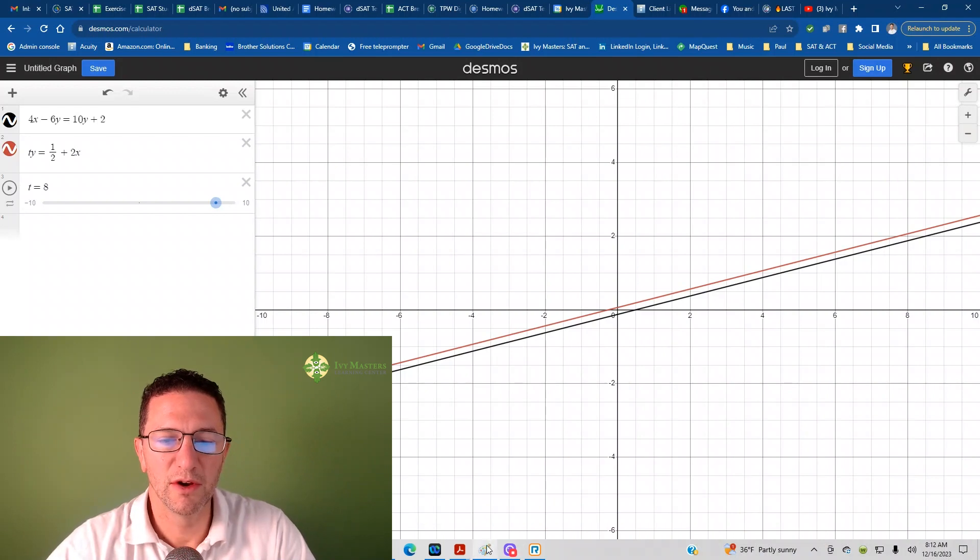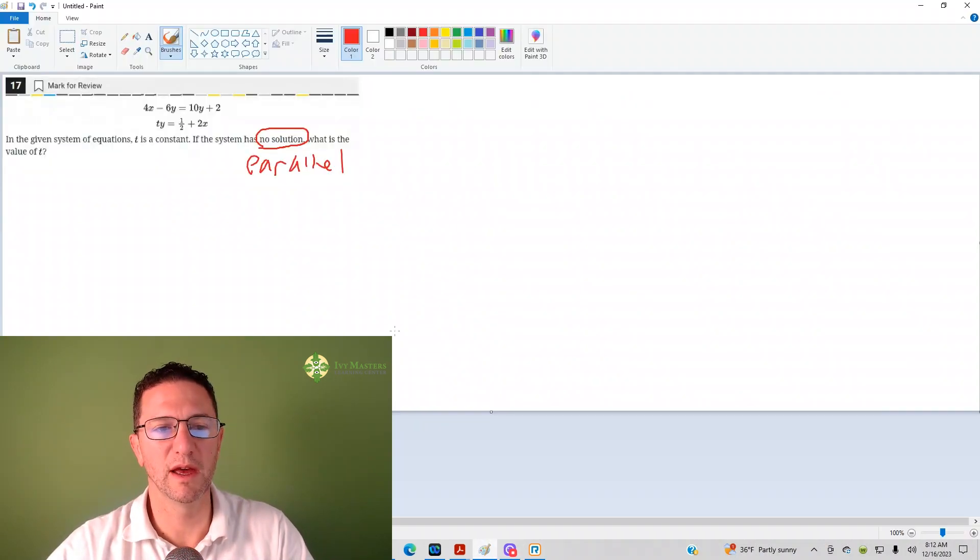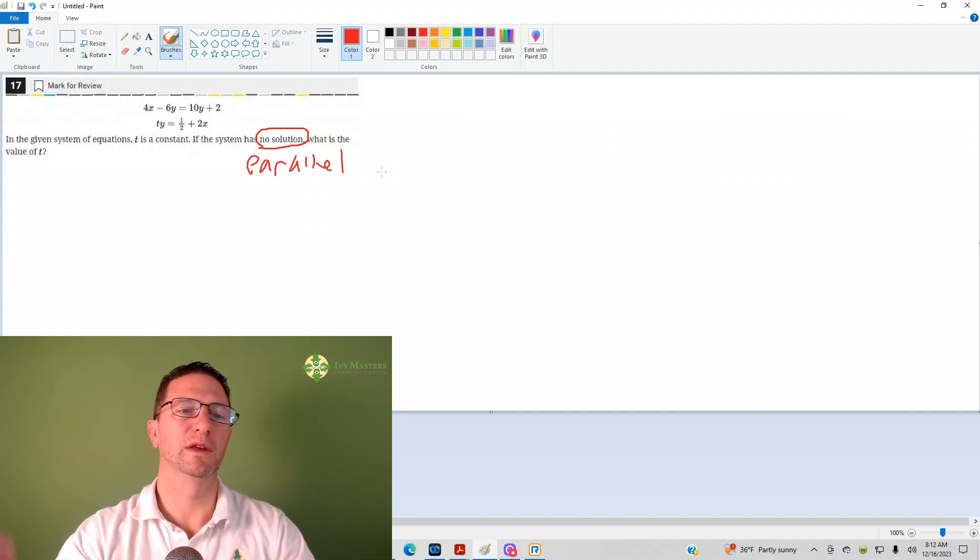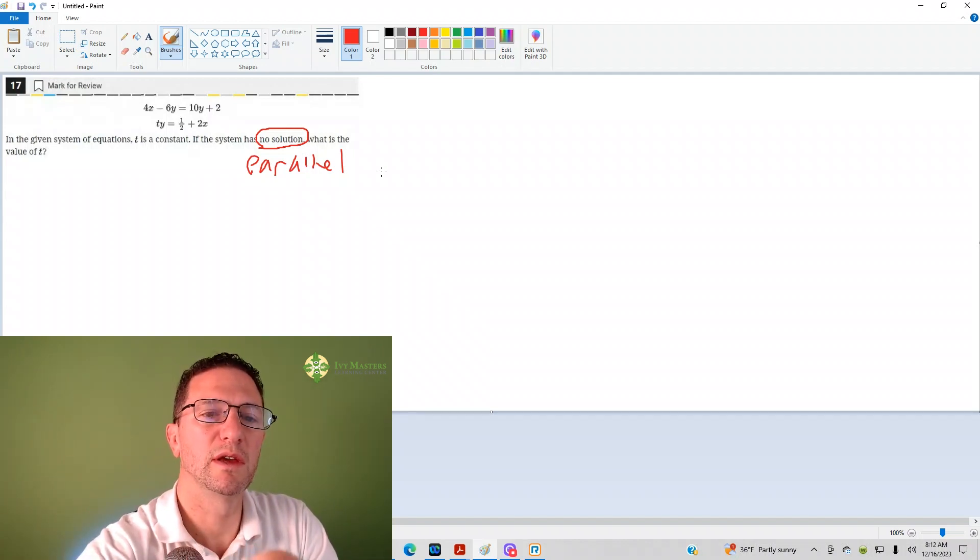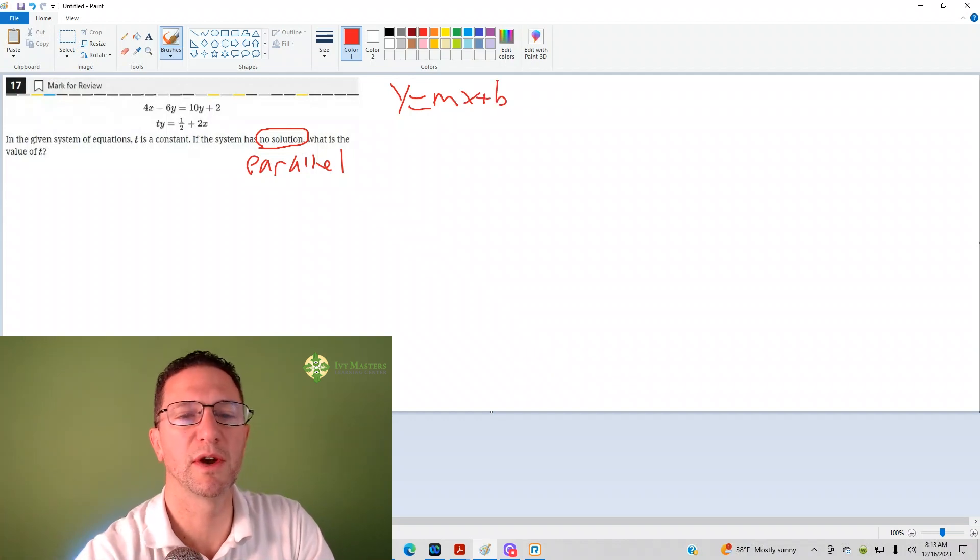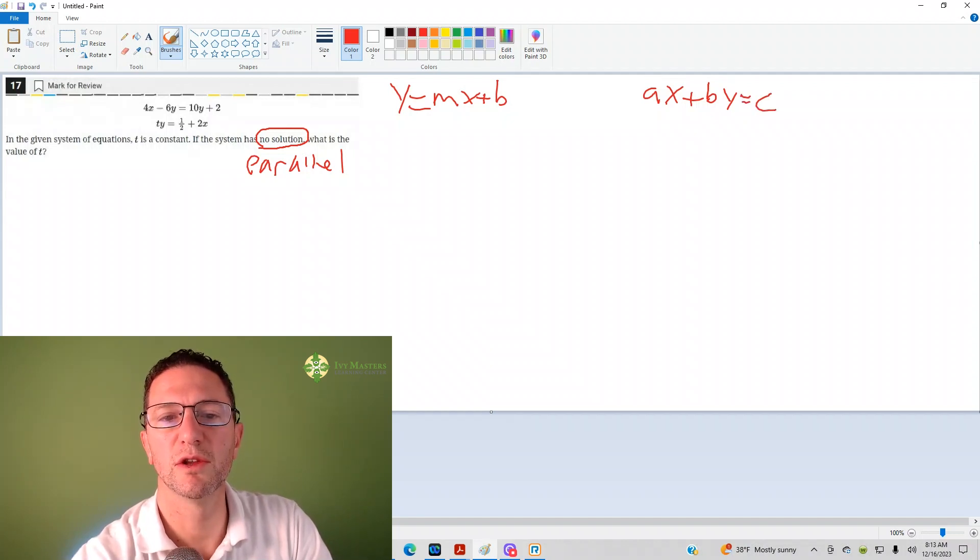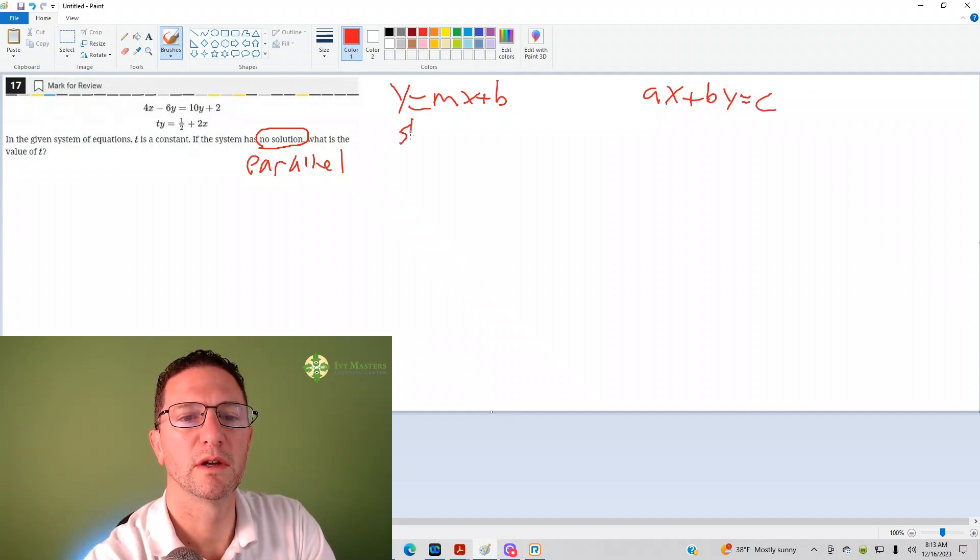Now, if you don't know how to do it, you can definitely do it like that. Now, how else could you do it? You could also do it, well, two things. When you're in the form y equals mx plus b, your slope is your m. When you're in the form ax plus by equals c, your slope here, slope equals m. Here, in this form, slope equals negative a over b.